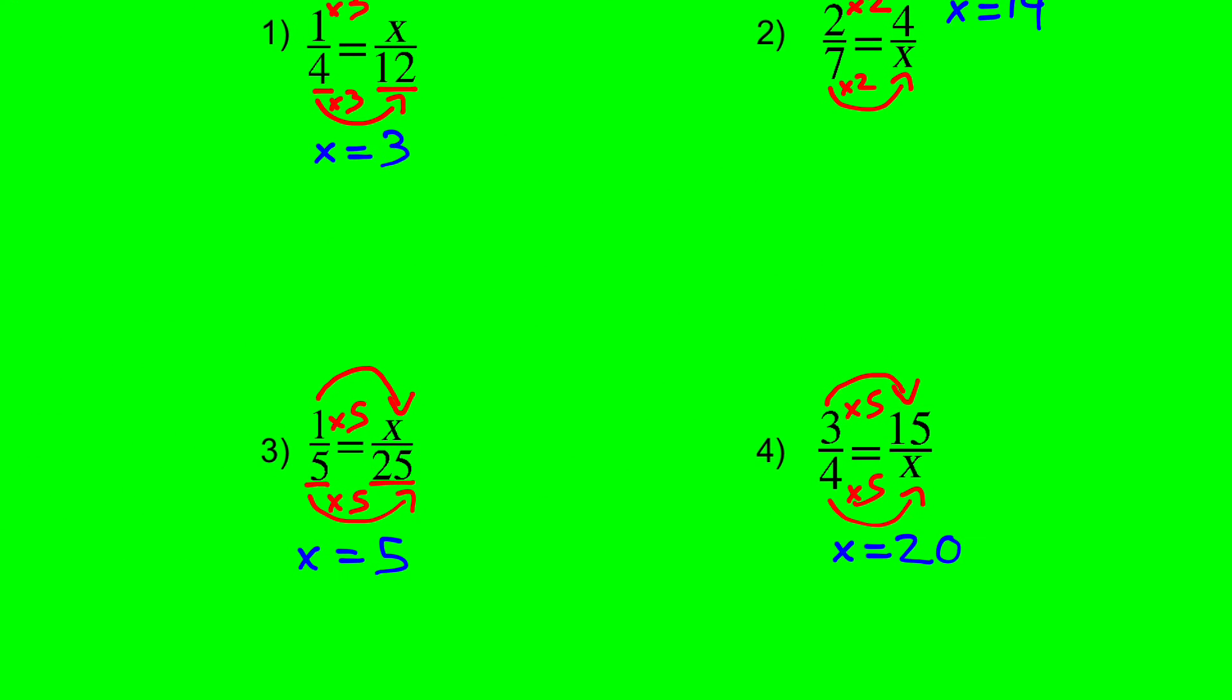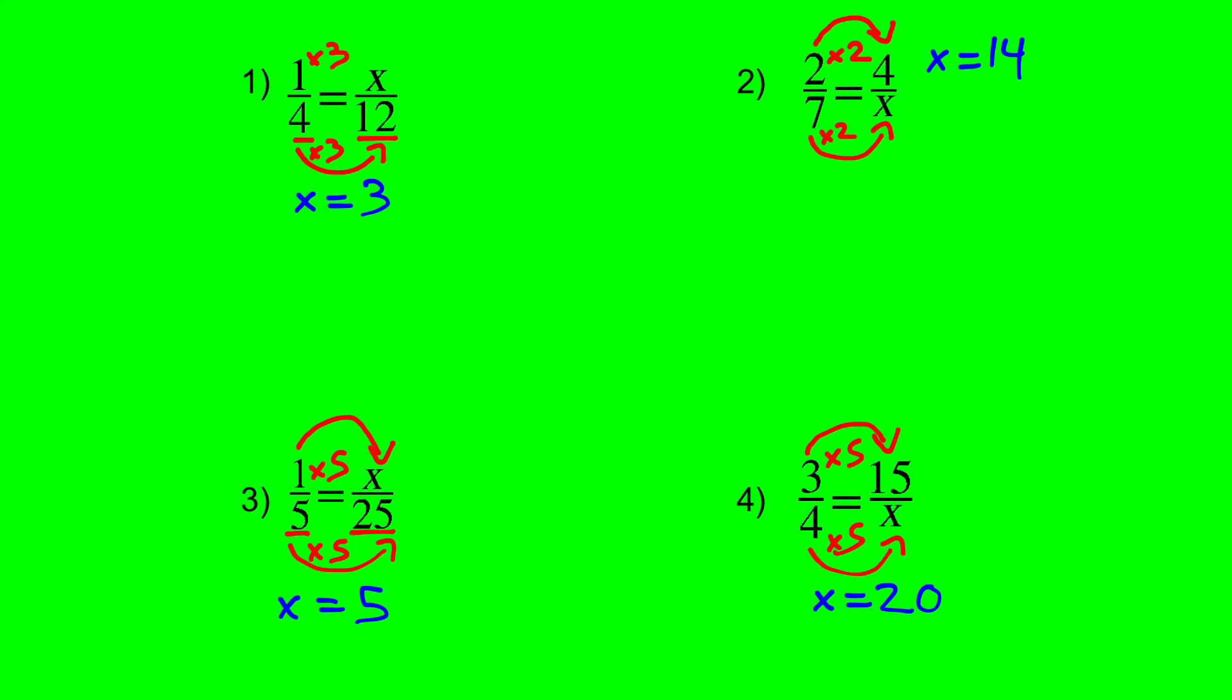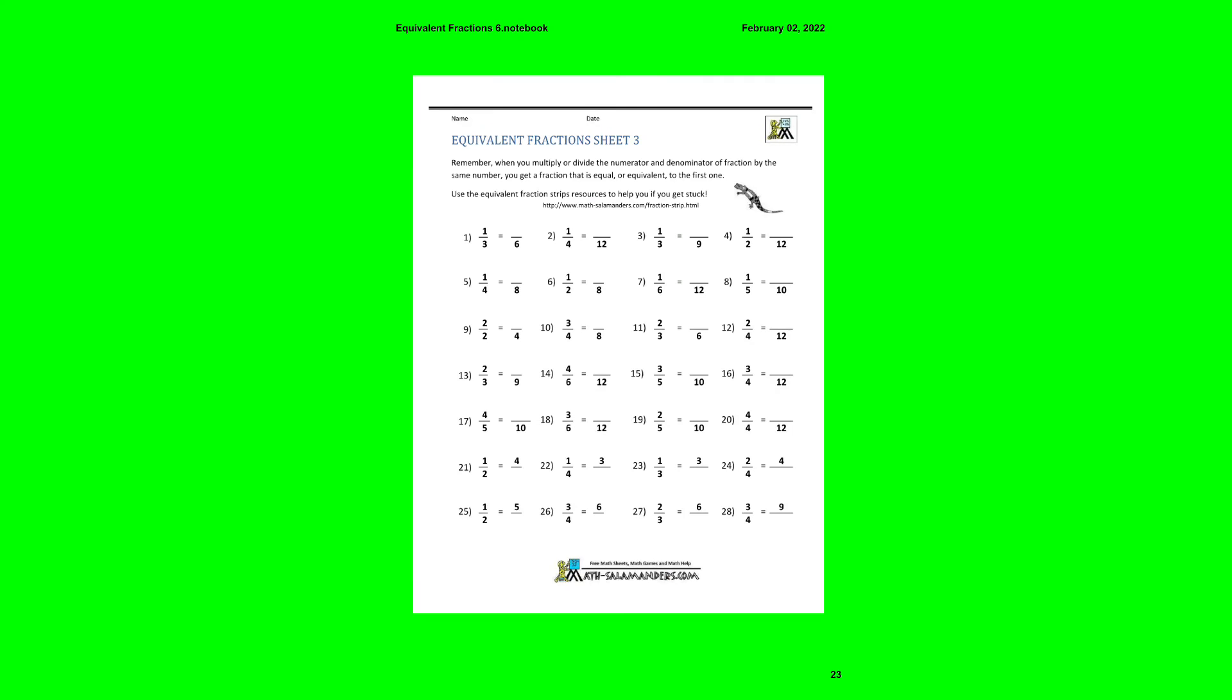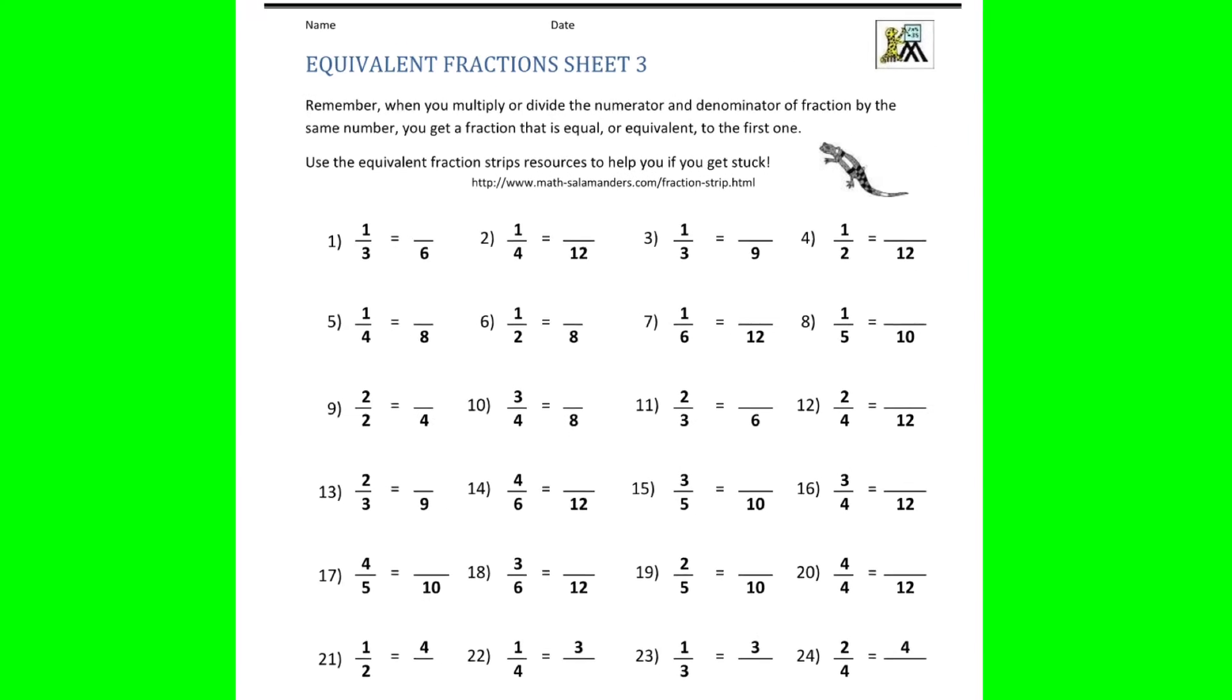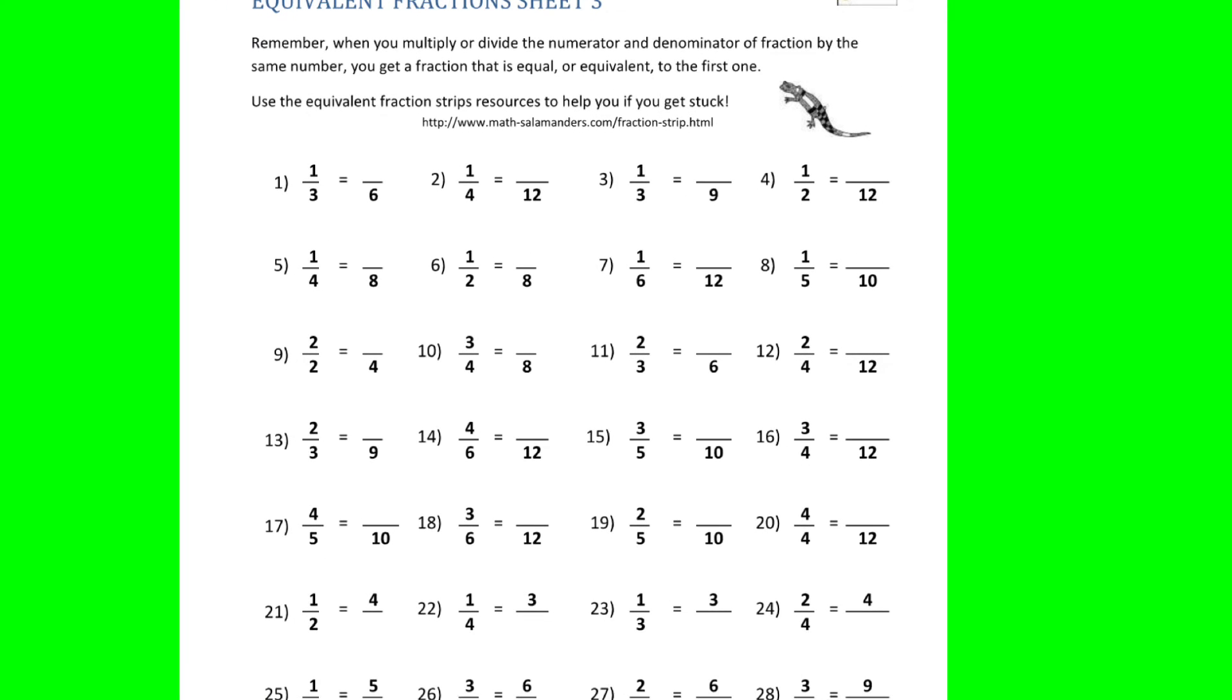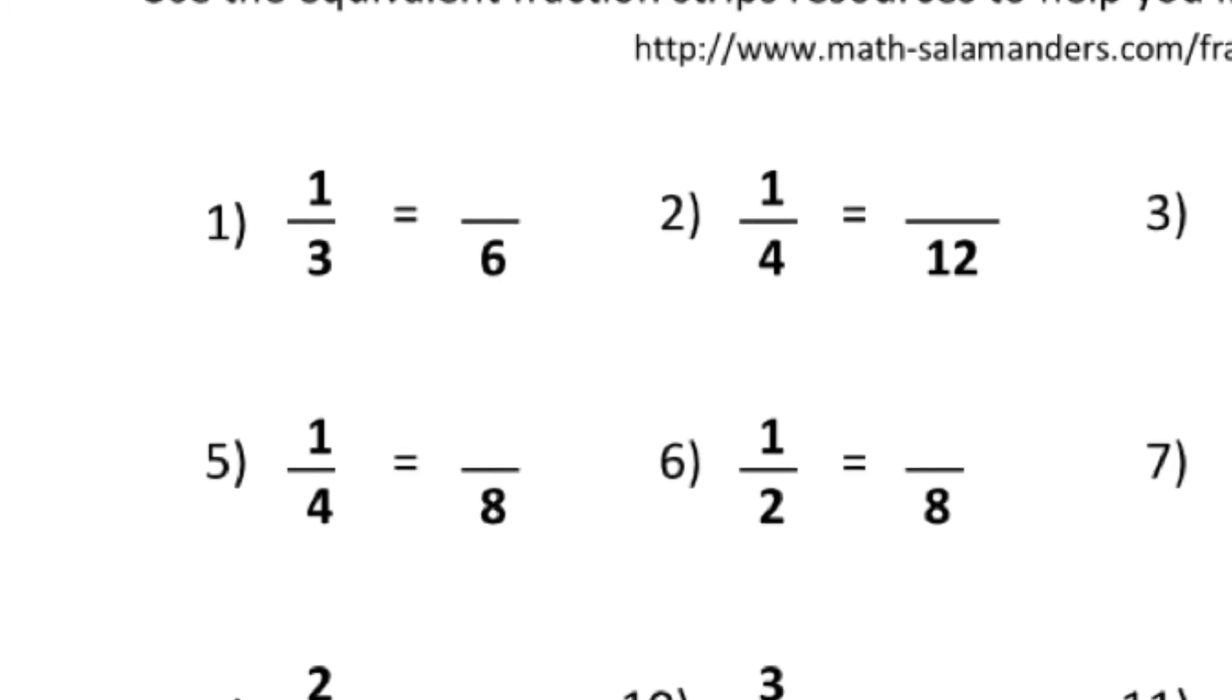So that's using equivalent fractions to find the missing numbers. And all the ones we did today were multiplication. So what the kids did for an assignment, they did this paper for an assignment. This is the paper that's due tomorrow. And that's what they have to do there. They have to identify the missing numbers.